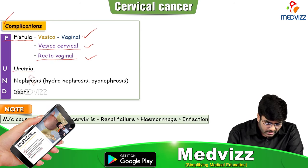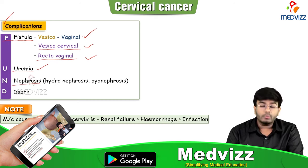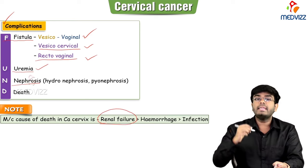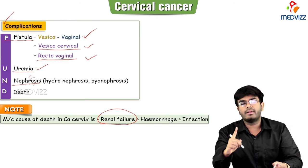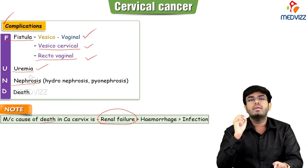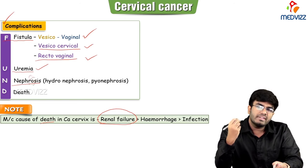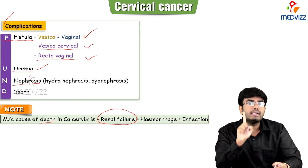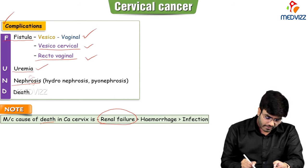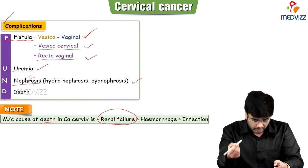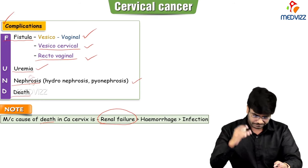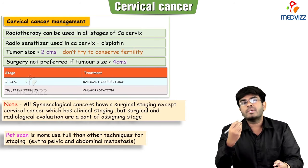Cervical cancer can metastasize and involve the parametrium, ureters, and kidneys. Kidney involvement causes nephrosis and uremia. Importantly, renal failure with uremia is the most common cause of death in a patient with cervical cancer. U is for uremia, N for nephrosis — hydronephrosis or pyonephrosis — which can lead to death.